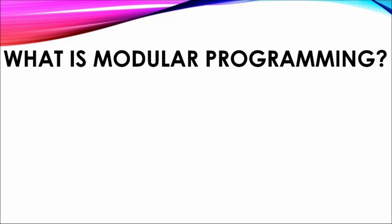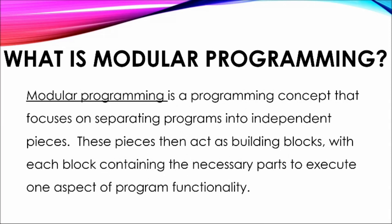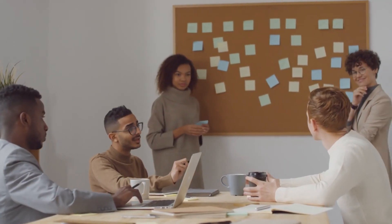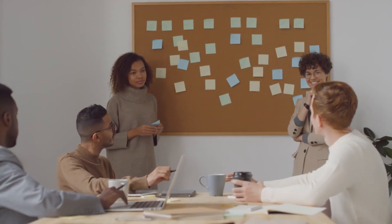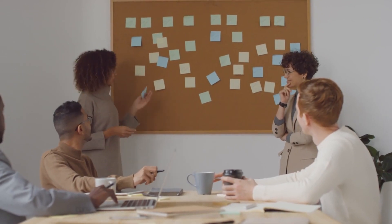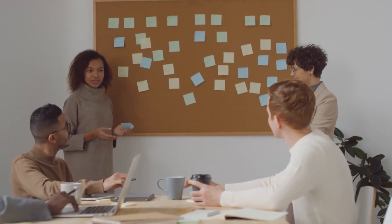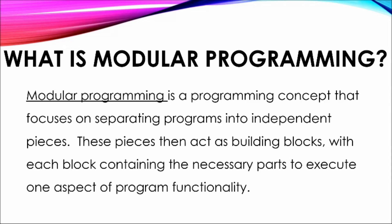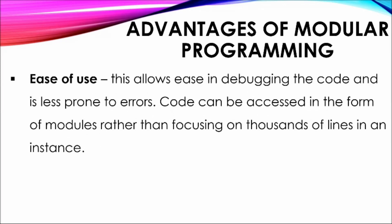What is modular programming? Modular programming focuses on the concept of breaking down or separating programs into independent pieces. These pieces then act as building blocks, with each block containing the necessary parts to execute an aspect of overall program functionality. This is equivalent to solving problems by dividing the challenge into smaller sections, then solving these sections individually — the same method used in businesses or in war with the divide and conquer approach.